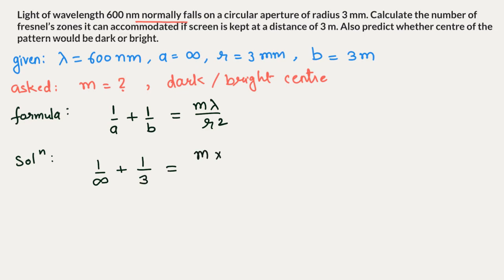So we have 1/3 equals m times 600×10⁻⁹ divided by r². r is given as 3 mm, so 3×10⁻³ squared.